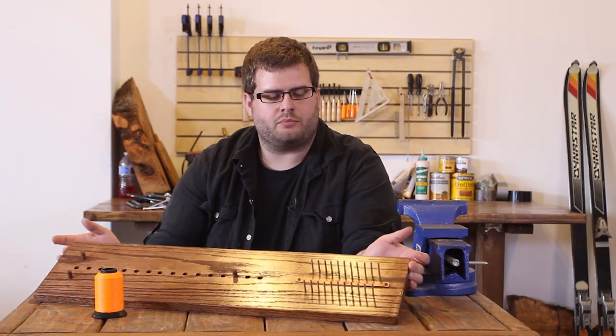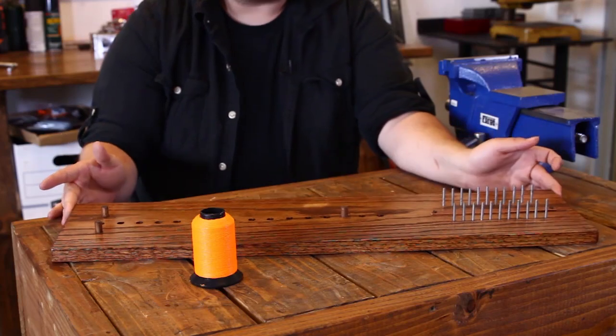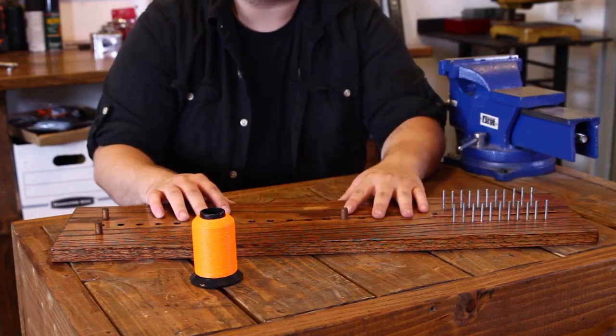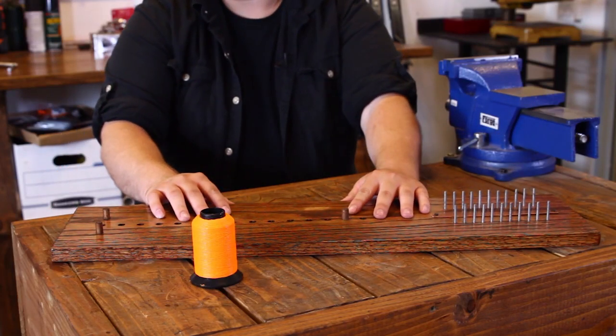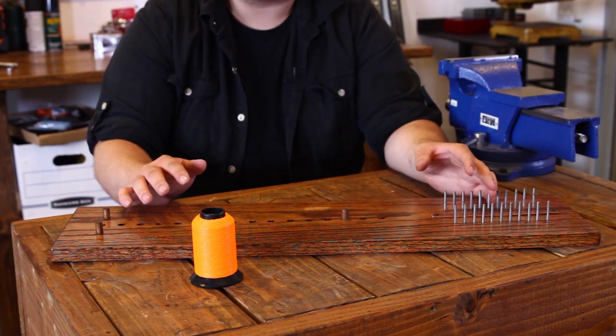So we're now here on our last part of module three for our Flemish jig. We have our jig all completed, nice and looking professional. I'm just going to show you how this jig is used to get the amount of string that you need for it.